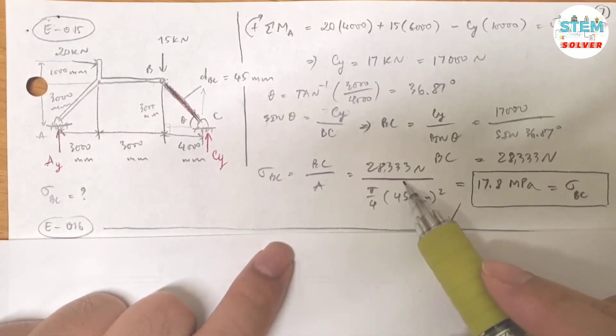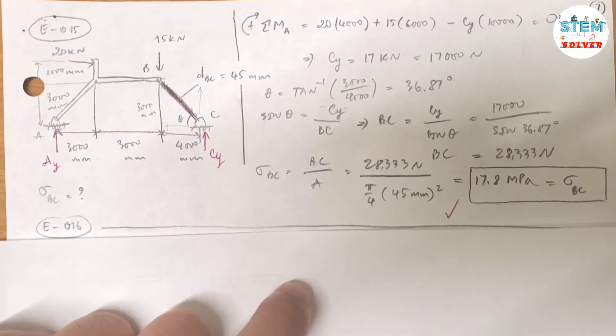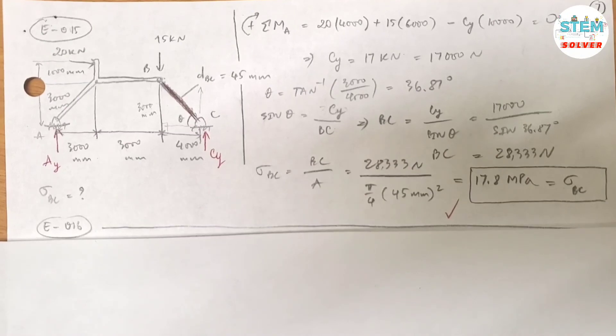Then punch it in the calculator, you got 17.8 megapascals. So that is the normal stress in member BC. That's it. If you find the video is helpful, feel free to give it a like, share, and subscribe to my channel in order to receive the most current videos. Don't forget to hit the bell so that you won't miss anything, and I'll see you next time.